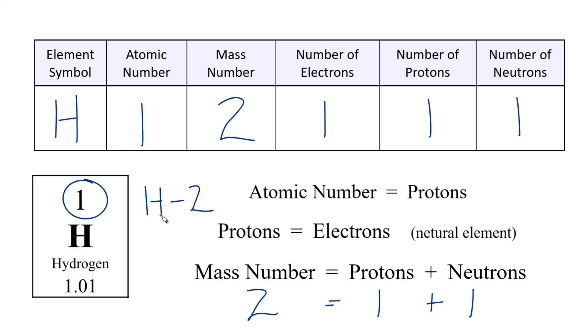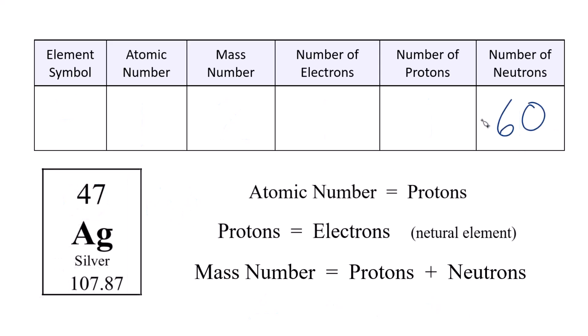Let's do another one with a few more neutrons. So for silver here, we have 60 neutrons. Fill the table out. So we have silver, Ag. Atomic number is 47, so we have 47 protons.